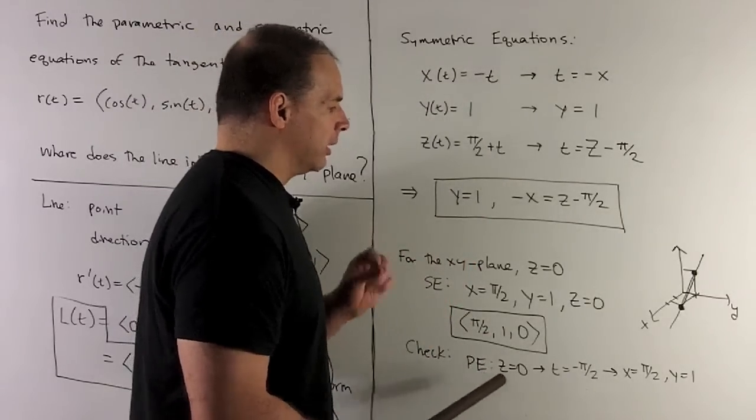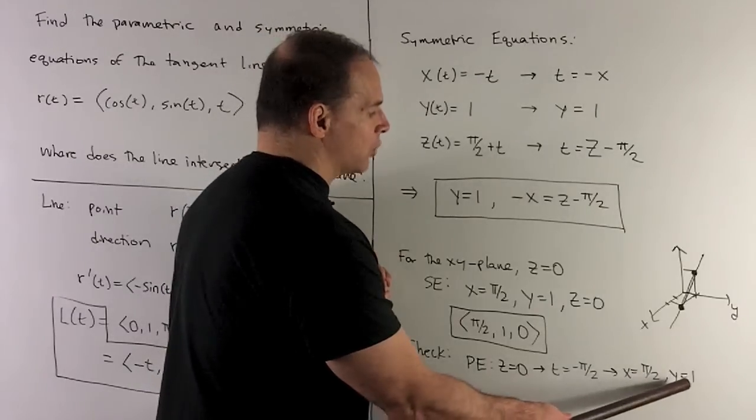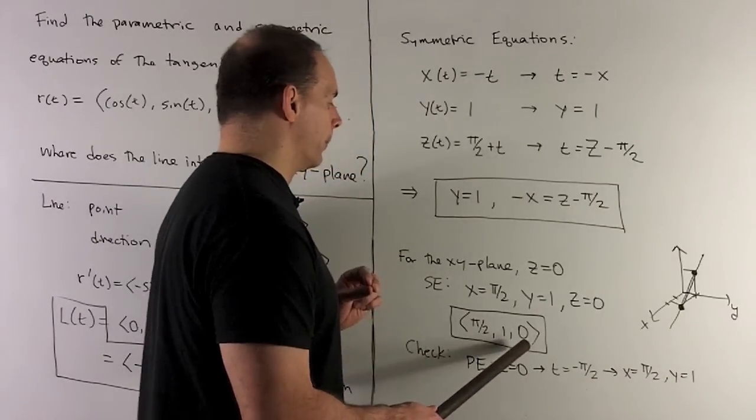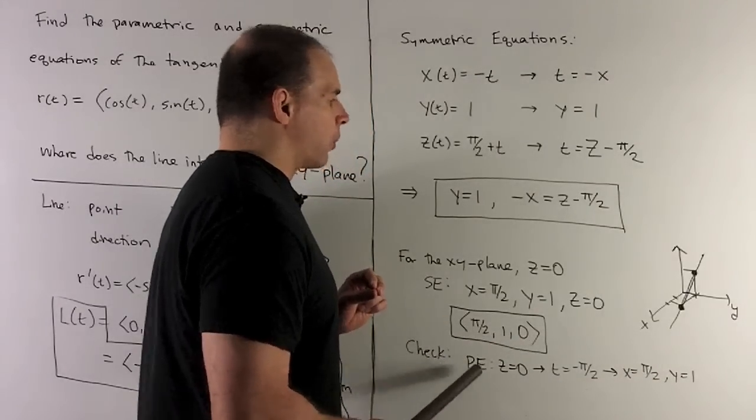So that's going to recreate our point (π/2, 1, 0). That checks our work.